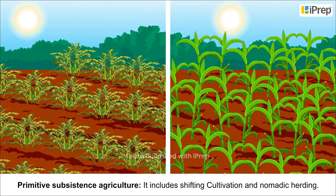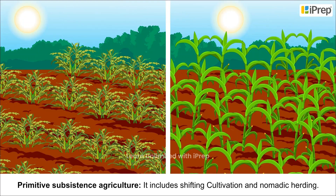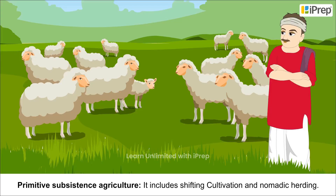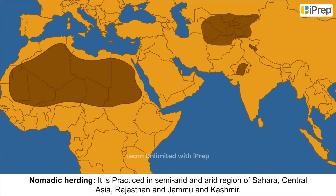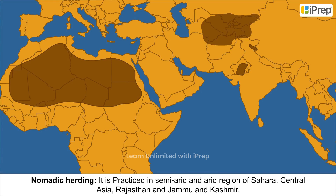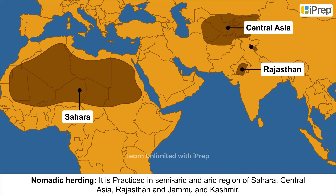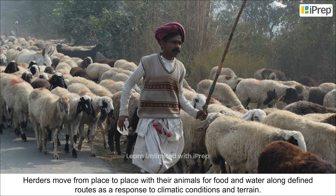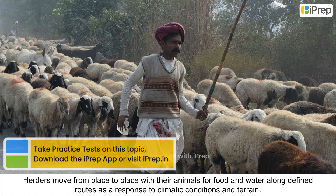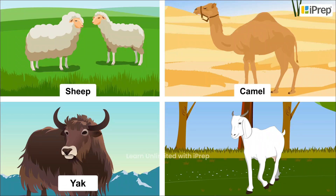Primitive subsistence agriculture includes shifting cultivation and nomadic herding. Nomadic herding is practised in semi-arid and arid regions of the Sahara, Central Asia, Rajasthan and Jammu and Kashmir. Herders move from place to place with their animals for food and water along defined routes in response to climatic conditions and terrain. Sheep, camel, yak and goats are reared for milk, meat, wool and other produce.